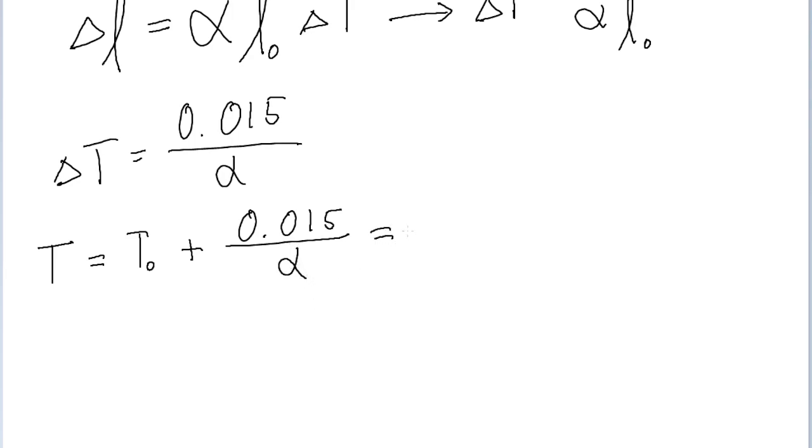So the initial temperature we're given is 25 degrees Celsius. And we're adding 0.015, that's our percentage increase of the length, divided by the coefficient of linear expansion for the material brass, which if you look this up in a reference table or on the internet, then you'll find a value that's about 19 times 10 to the power of negative 6 inverse degrees Celsius. And if you put that into a calculator...